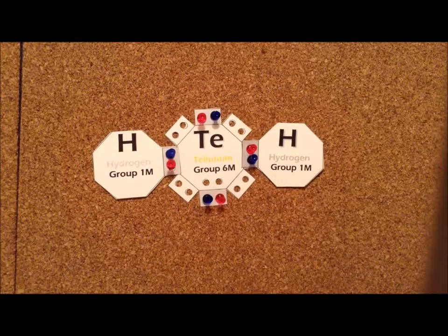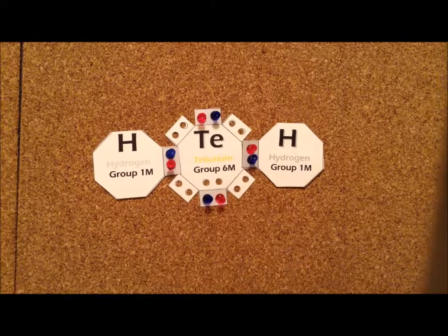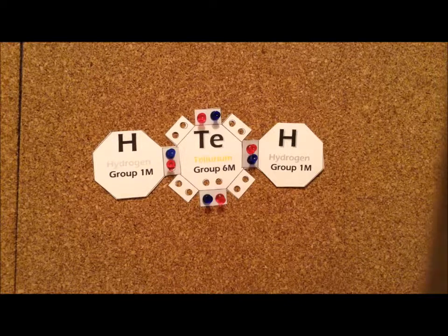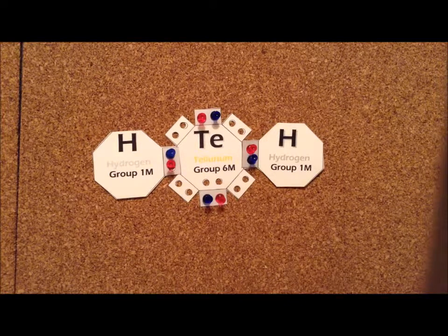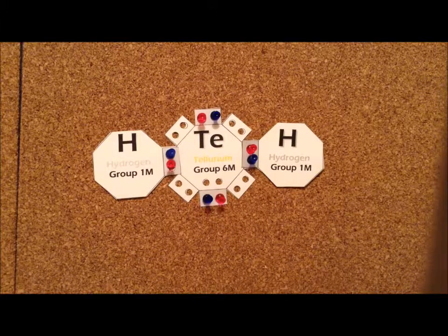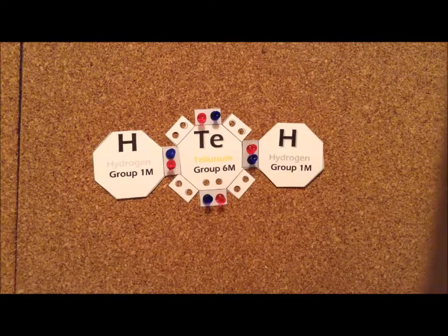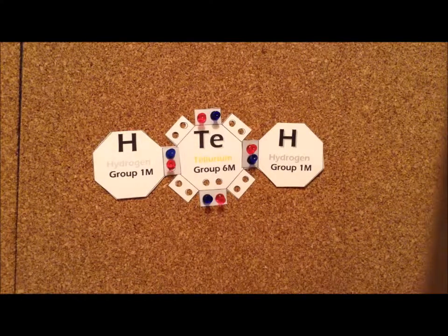Hydrogen telluride, H2Te, is, as you might predict, a foul-smelling poisonous gas. To make a structure, we need to allocate eight valence electrons, and we allocate them in exactly the same way as we did for hydrogen sulfide and hydrogen selenide.